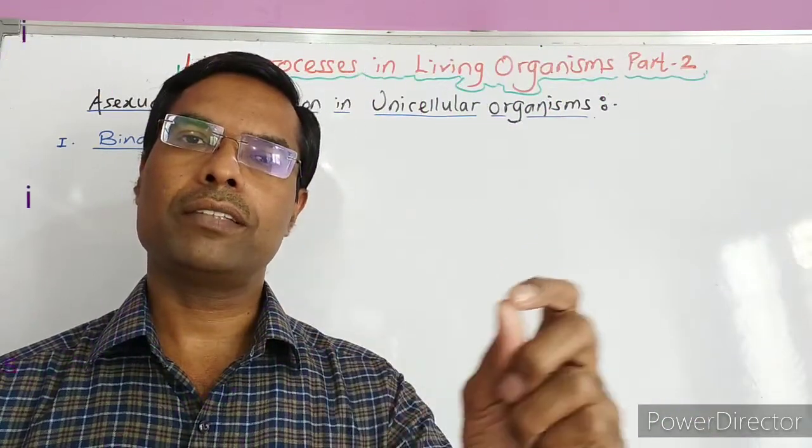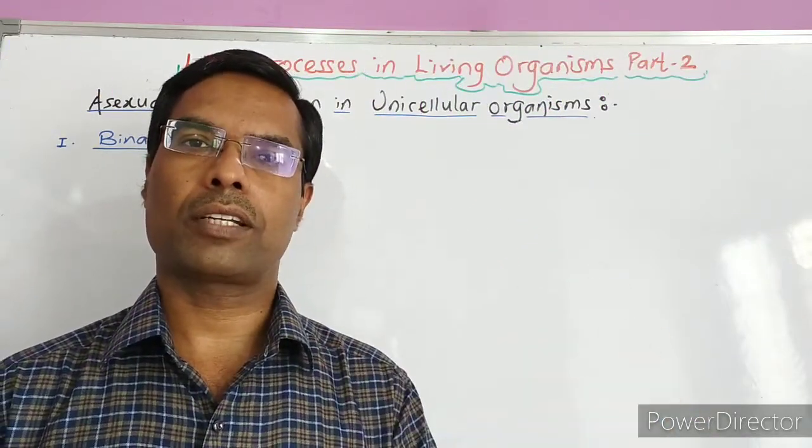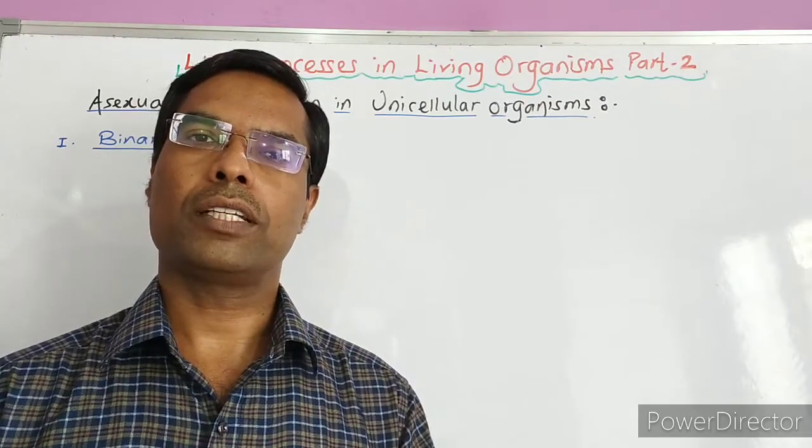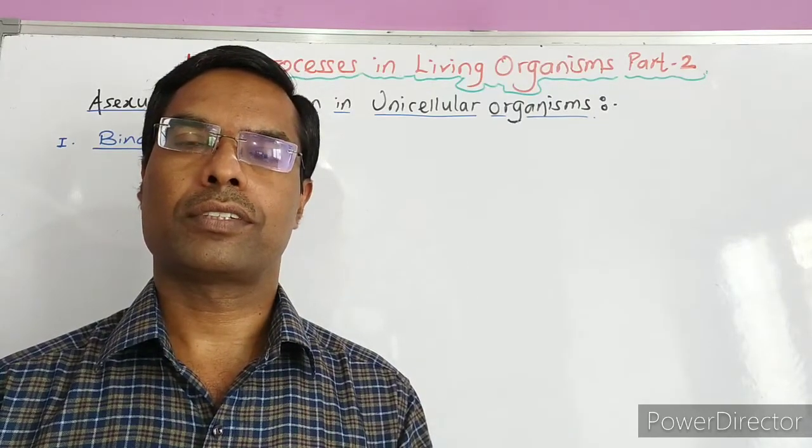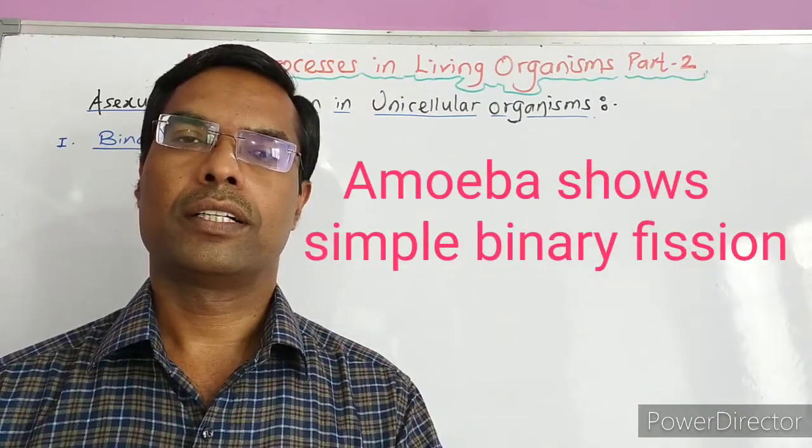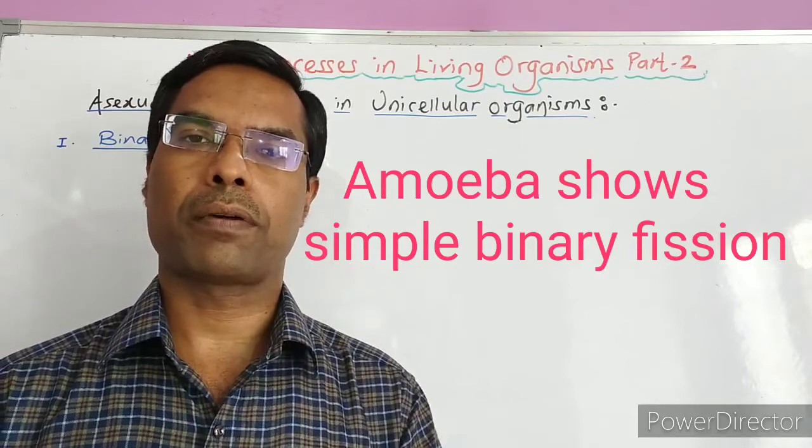How it takes place in unicellular and multicellular organisms, we have to study one by one. First of all, in unicellular organisms, how the process of asexual reproduction takes place. Take the example of amoeba, in which binary fission is found.